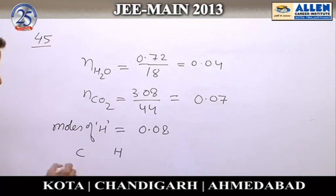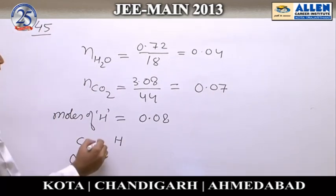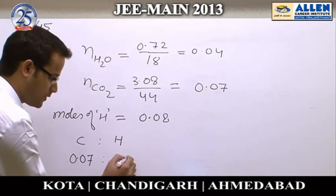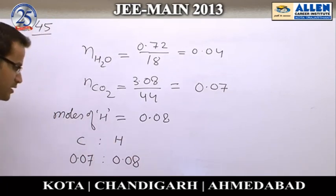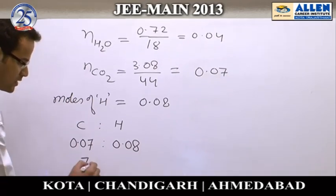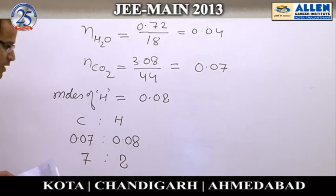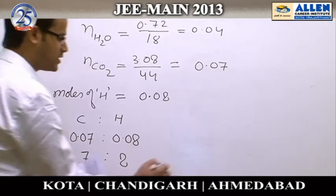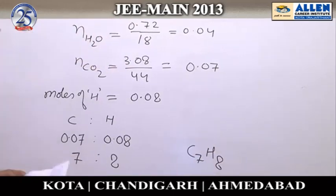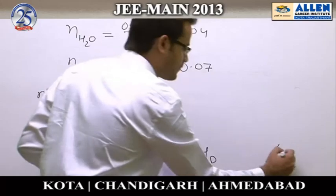From moles of water, we calculate moles of hydrogen atoms = 0.08. In the given hydrocarbon, there is only carbon and hydrogen. Number of moles of carbon = 0.07, number of moles of hydrogen atoms = 0.08. Taking the simplest ratio, we get 7:8, so the empirical formula of the hydrocarbon is C7H8. That is the fourth option, so the answer will be 4.